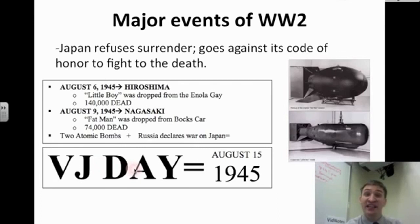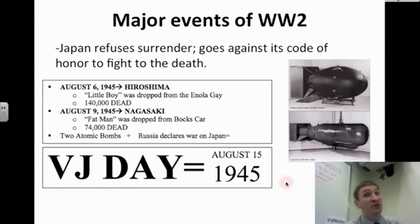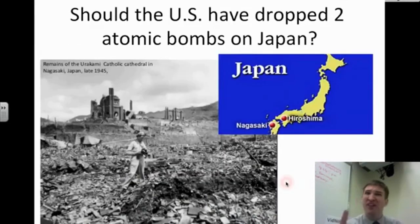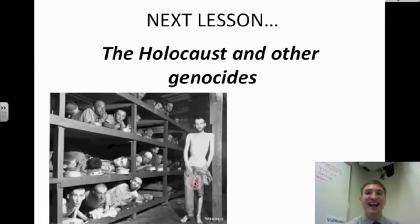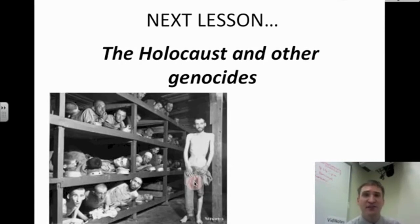VJ Day — Victory in Japan Day — becomes inevitable, and Japan finally surrenders on August 15th, 1945. World War II comes to a close. But the moral question still remains today: should the U.S. have dropped two atomic bombs on Japan? Next lesson, we talk about the Holocaust and other genocides. Until that time, this is Mr. Deegan signing off.